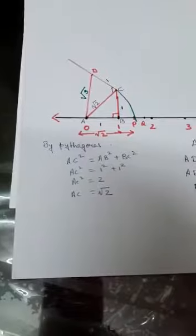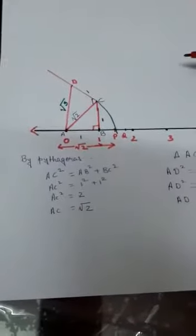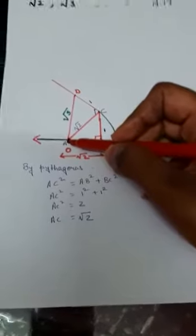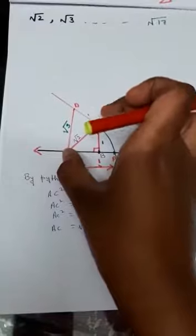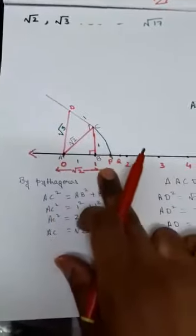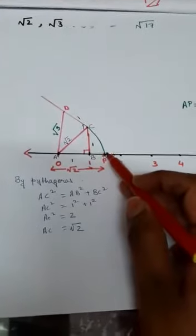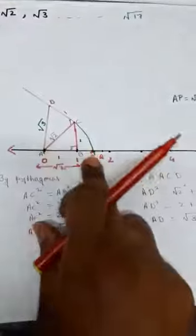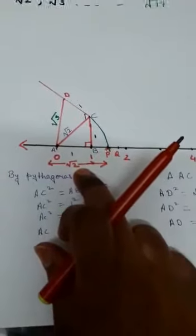Now how will we represent that root 2 on our number line? We put our compass at point A and we will cut an arc from C. Let's see where that arc will cut. This arc will cut at point P. We got a new point P. This is our radius. This is also our radius. We know that AP is equal to AC. So AP is equal to root 2. We got root 2 on our number line. Very easily.